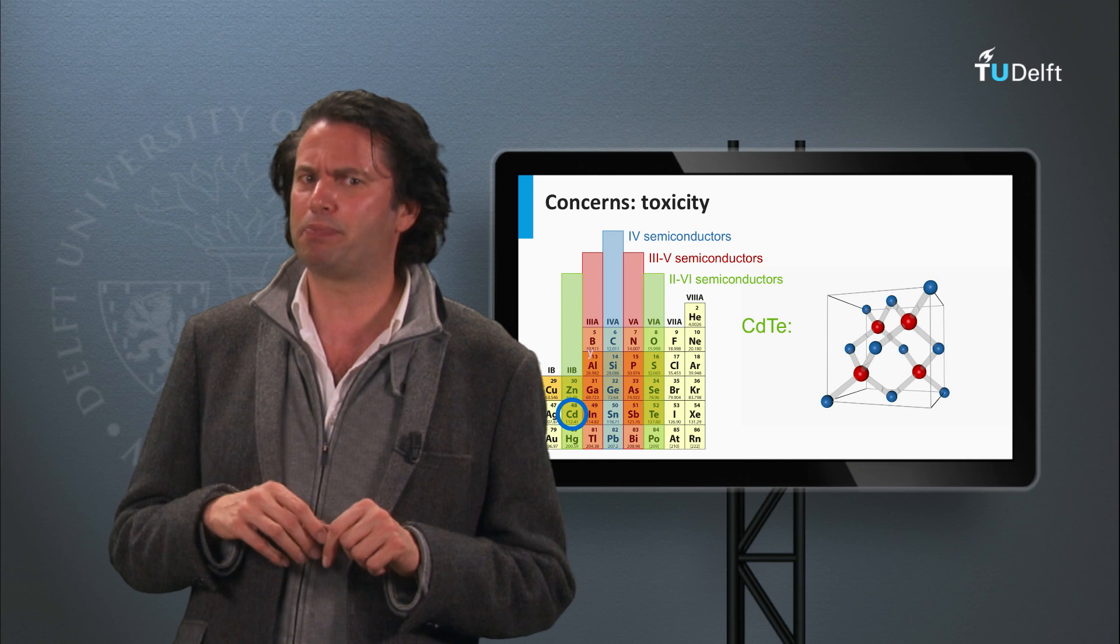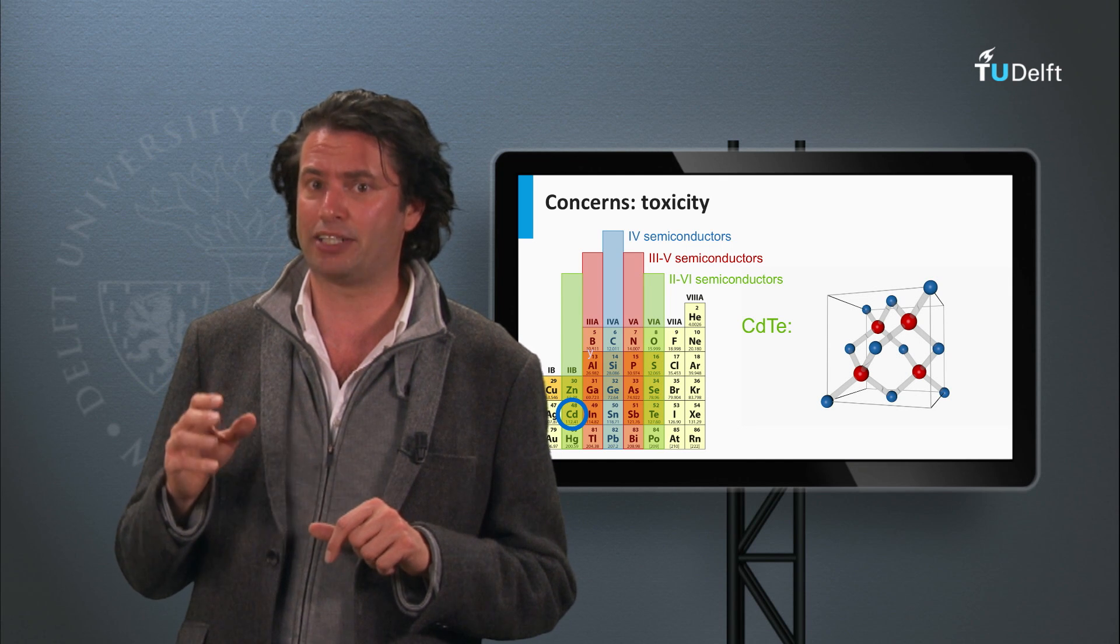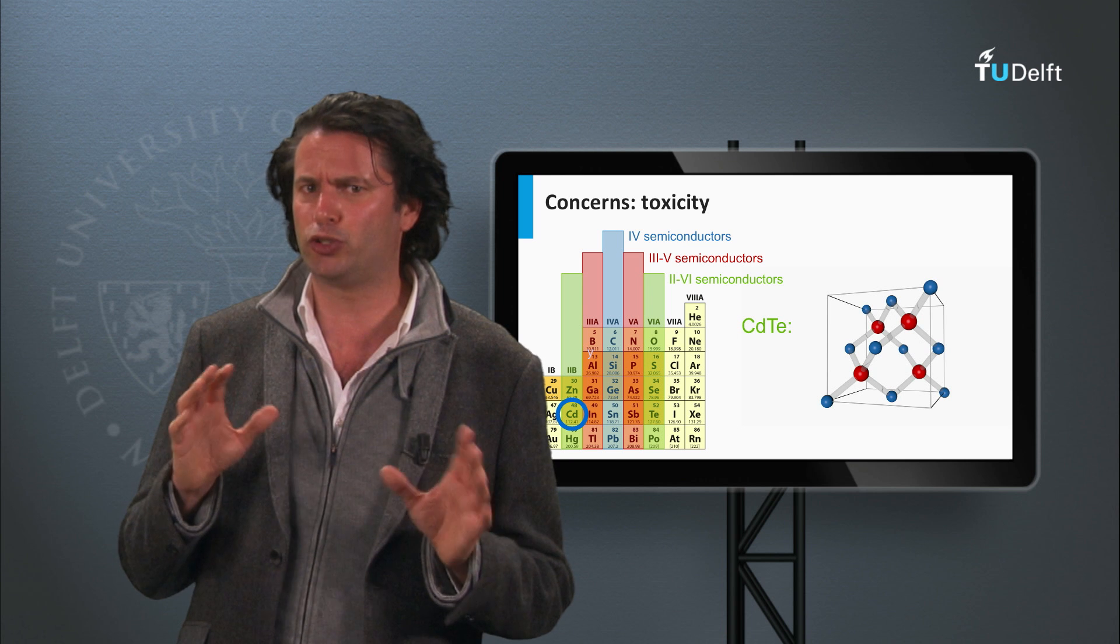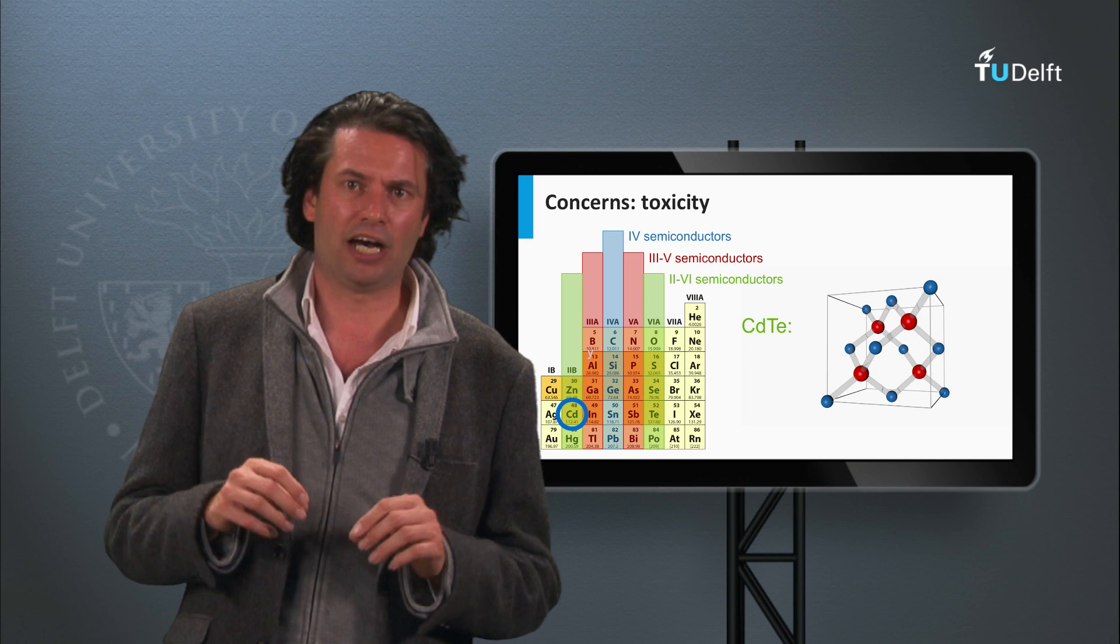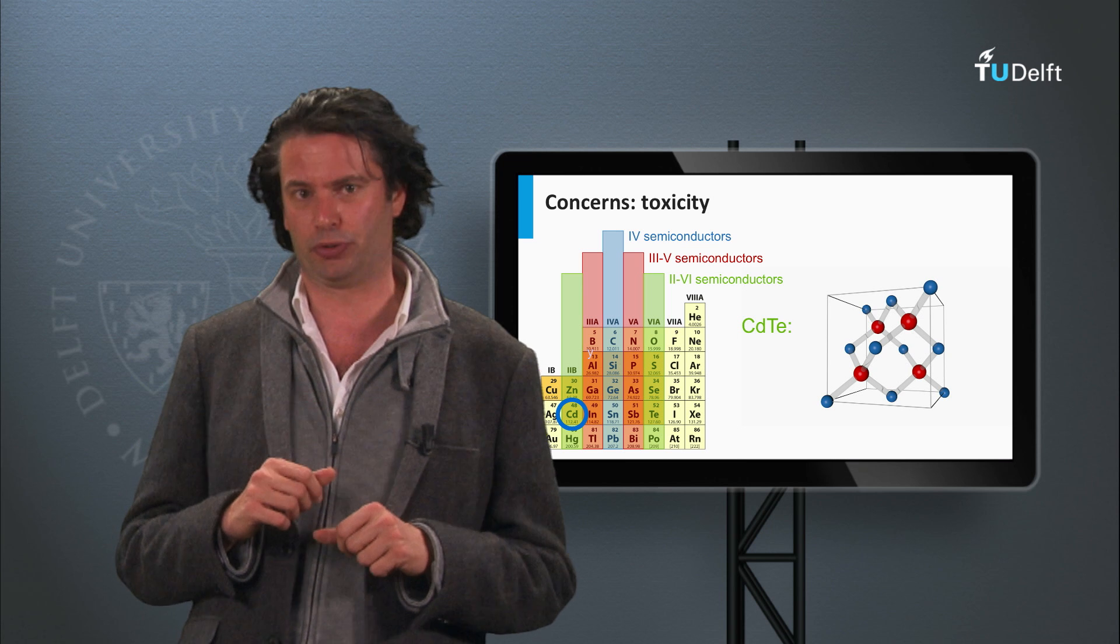A 2 GW per year production capacity as installed by First Solar at the moment would take up around 2 percent of the total cadmium consumption by the industry and would not yet be a dominant contributor.